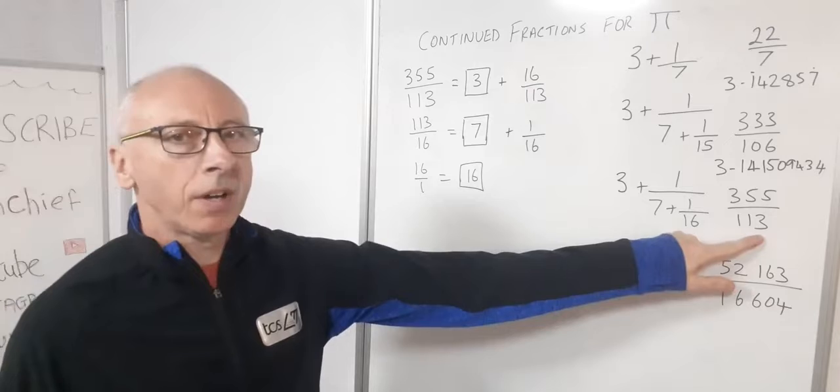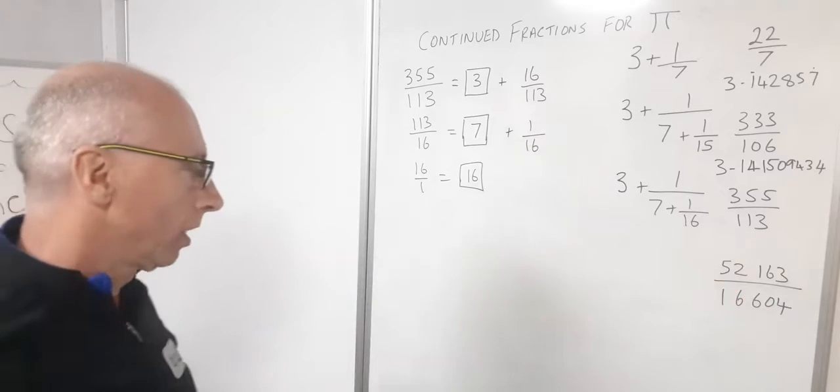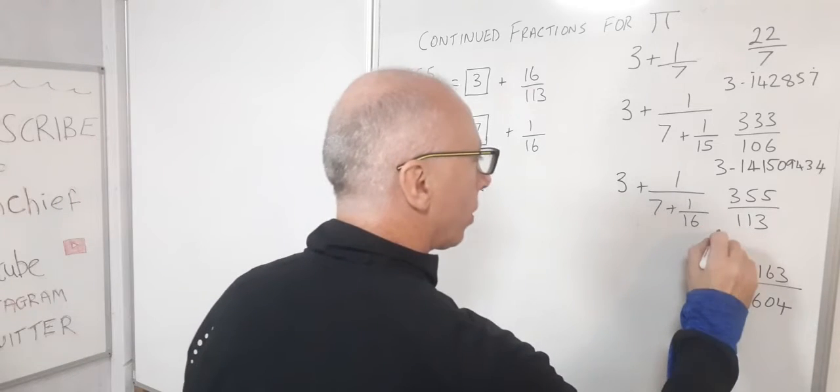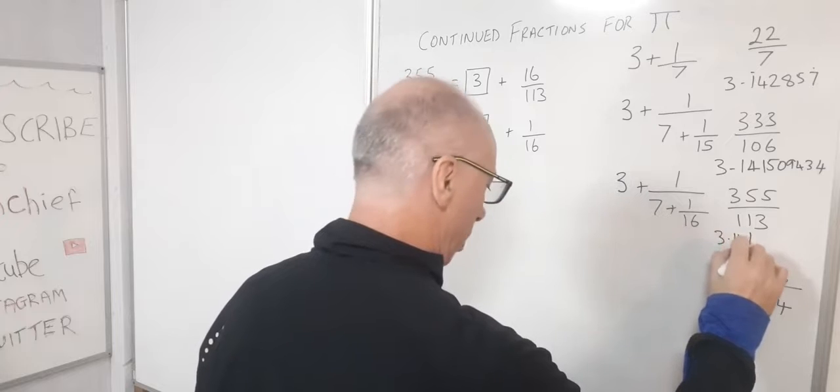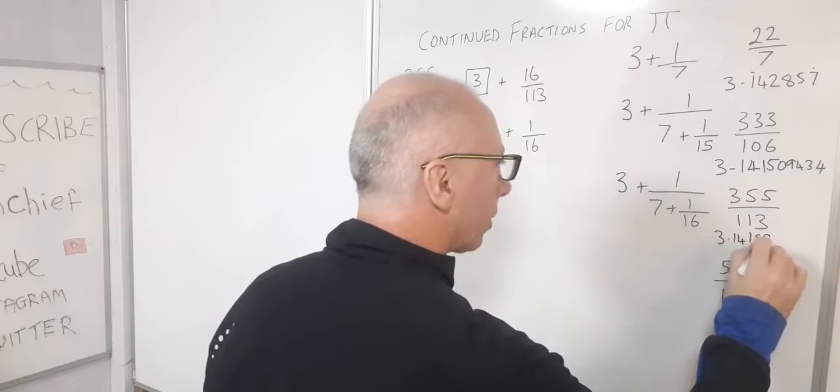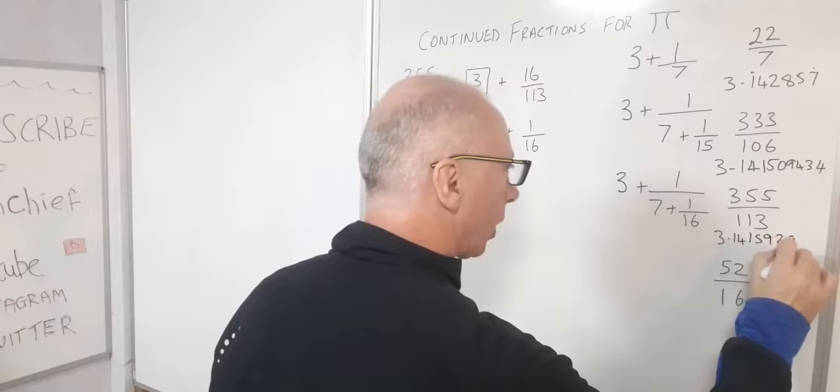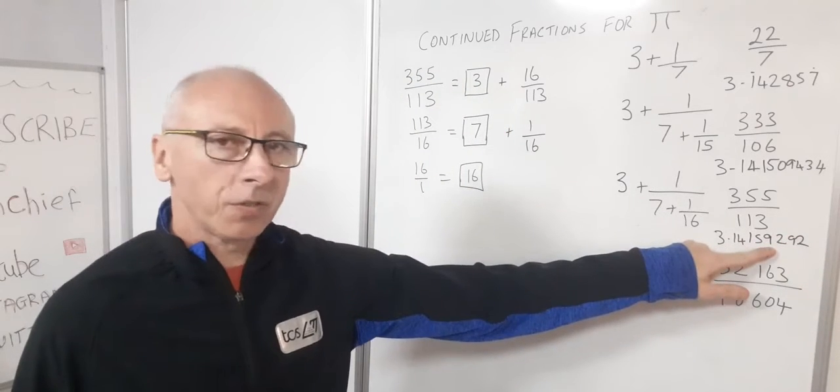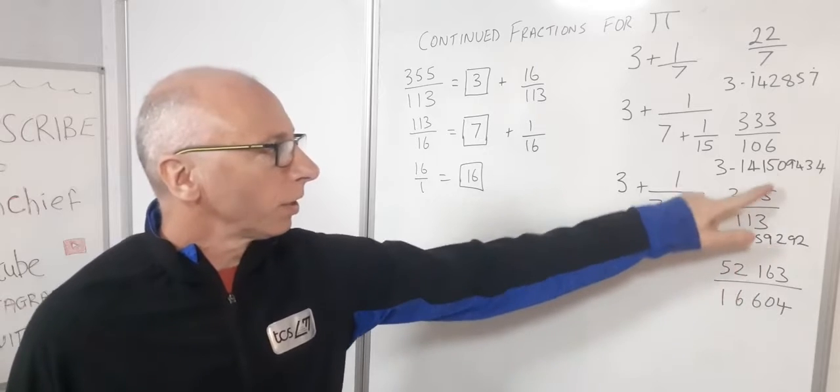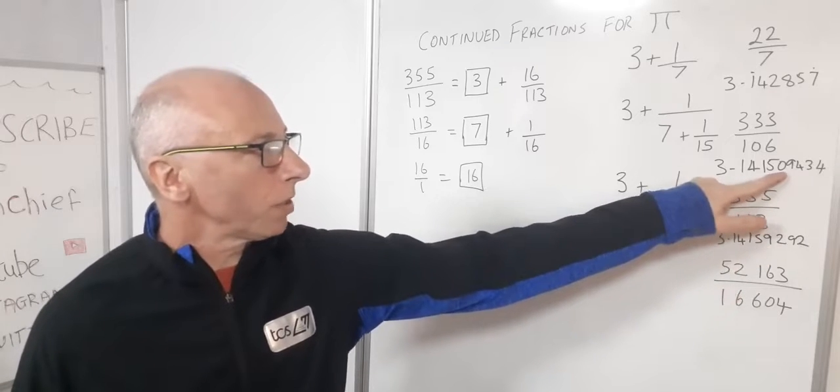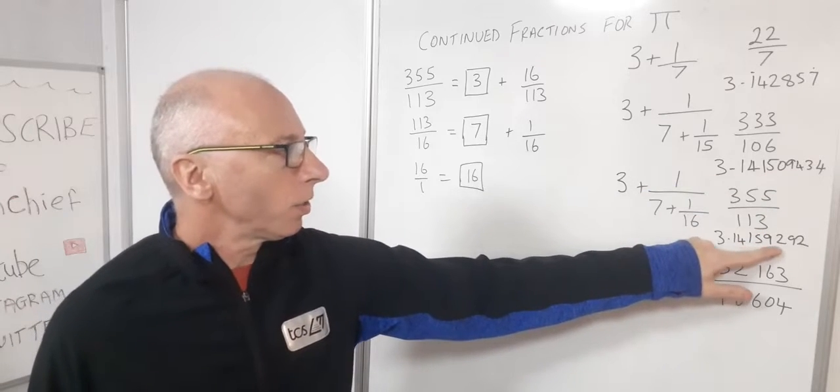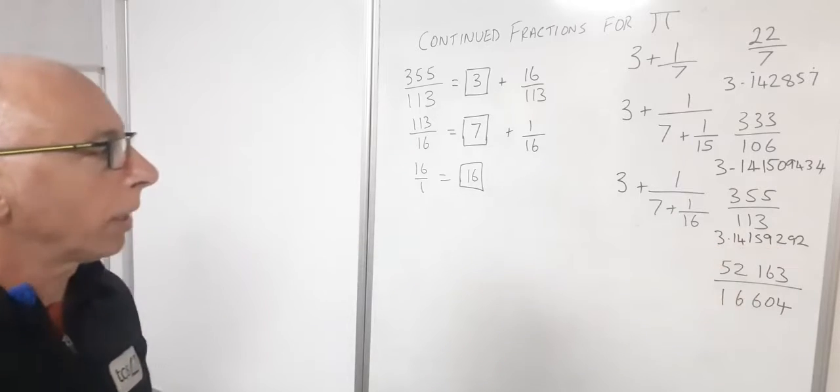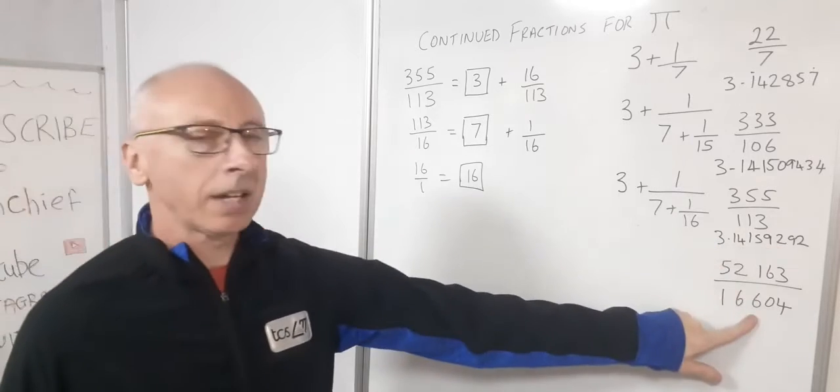So what about this 355 over 113? So that then gives us 3.14159292. So our first five digits are definitely looking good compared to this one. It's made a big jump from the 0.9 to the 92, so that's a little bit closer.